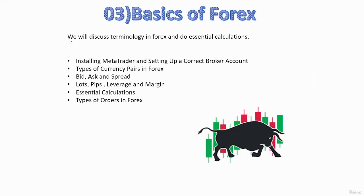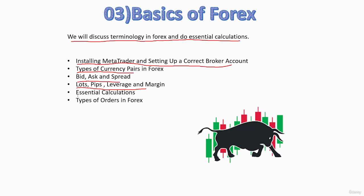In the third section, we will discuss terminology in forex and do essential calculations. First, we will install MetaTrader and set up a correct broker account. Then we will discuss types of currency pairs, bid/ask and spread, and basic terminology — lots, pips, leverage and margin. Then we will do essential calculations in forex, and finally discuss different types of orders in forex.